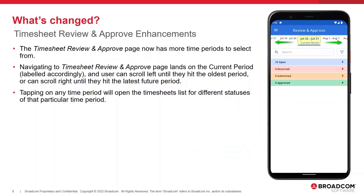In the Timesheet Review and Approve space, this page also has access to more time periods to select from. Navigating to this page lands on the current period, which is labeled. Users can scroll left to view more past periods and scroll right to view future periods. Tapping on any time period will open the timesheets list for different statuses for that particular time period.